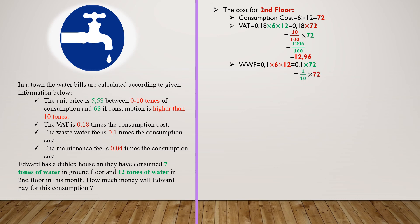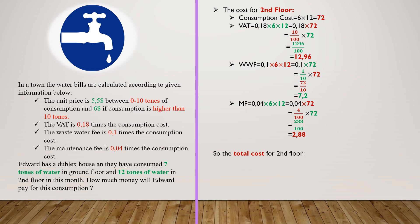The waste water fee is 0.1 multiplied by consumption cost. We know that 0.1 is 1 divided by 10. If we multiply these numbers, we will have 72 divided by 10, which is 7.2 in decimal form. If we add up all these costs, we will find the total cost for the second floor as 95.40 dollars.